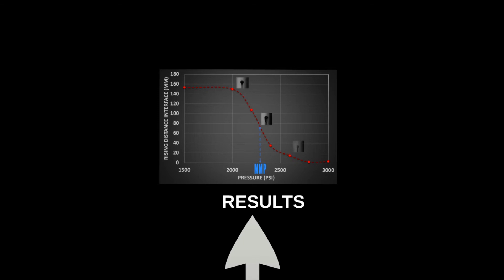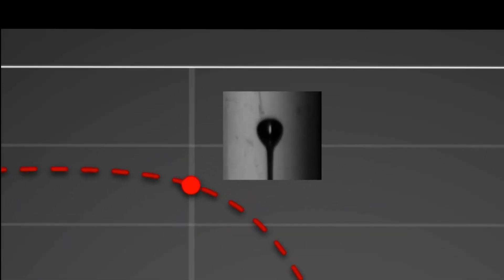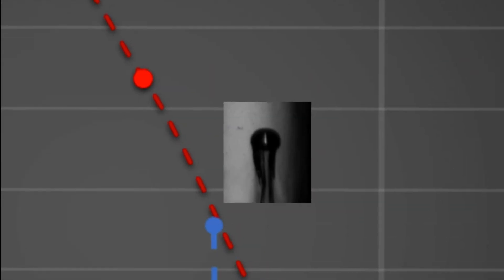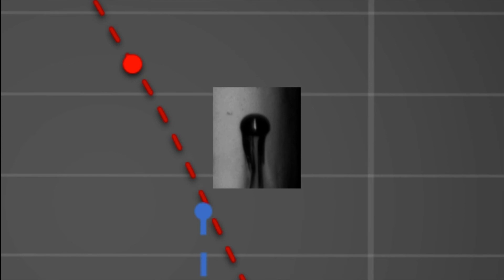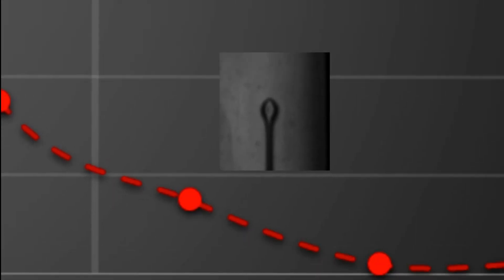The rising distance method can be compared to the tail formation method using pictures of the bubbles. Below the MMP, the bubble retains its near-spherical shape and rising distance is high. At the MMP, the bubble shows a tail-like feature at the bottom. Above the MMP, the bubble disperses quickly, just after the water-oil interface.